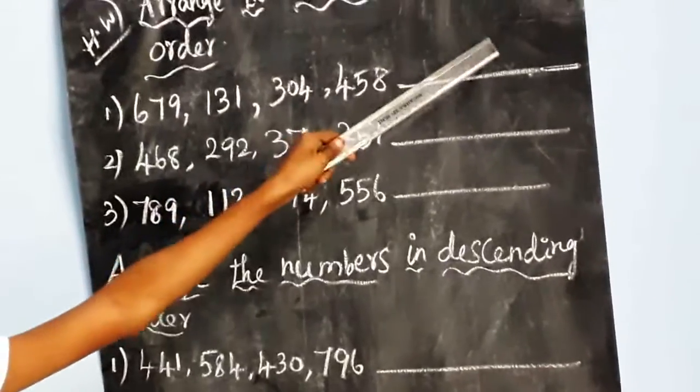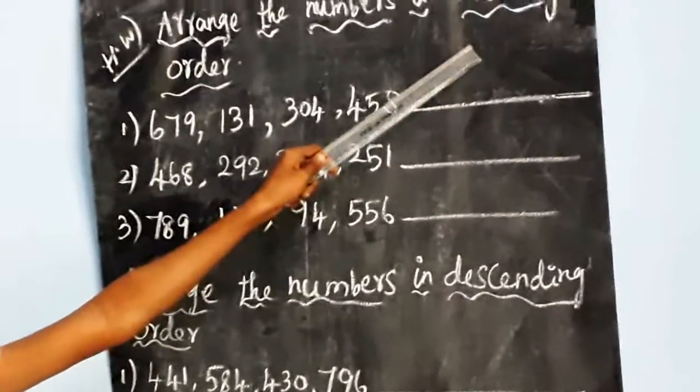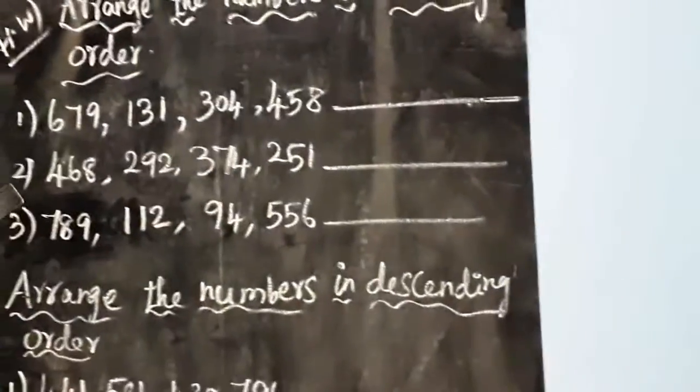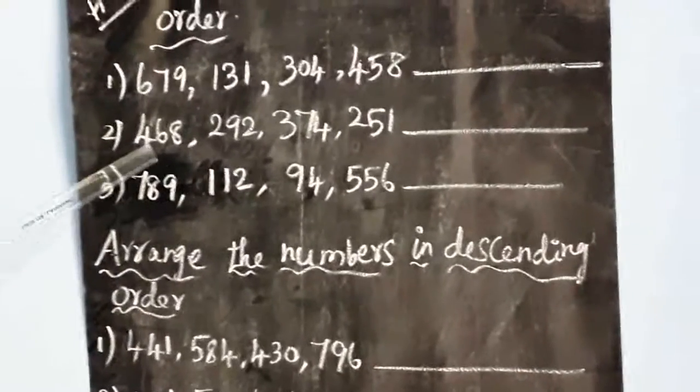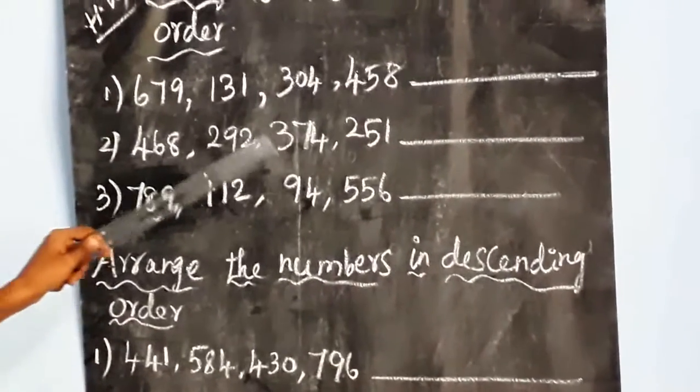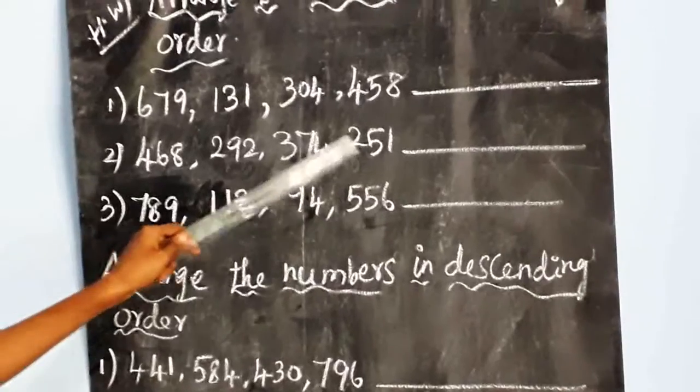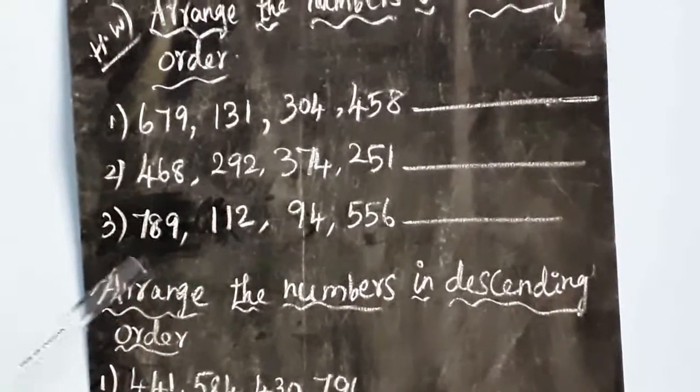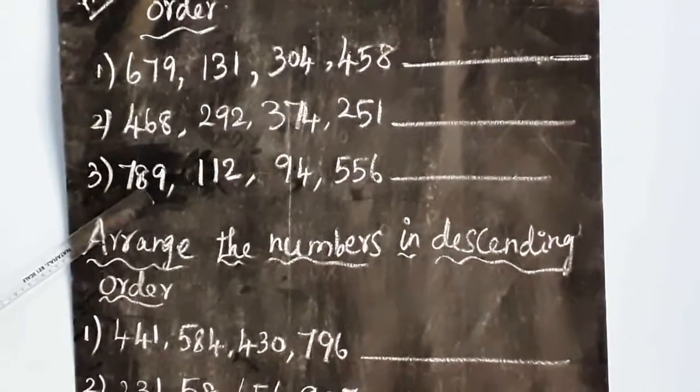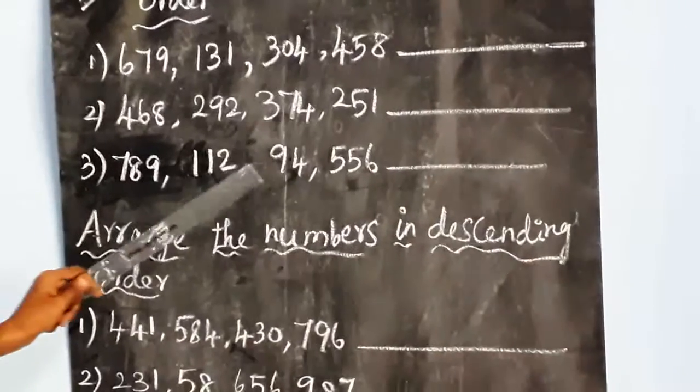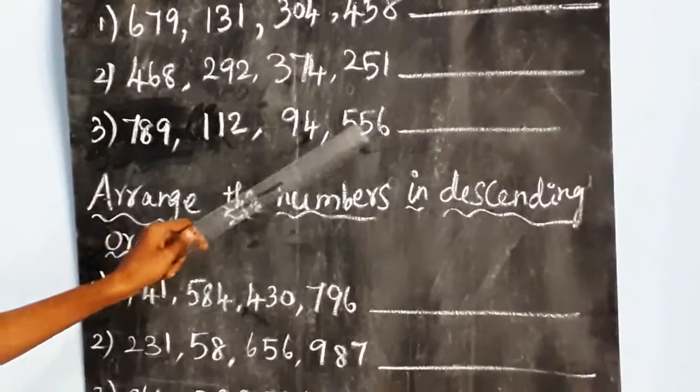Just write the answer in ascending order, smallest to greatest. Second sum: 468, 292, 374, 251. Then third sum: 789, 112, 94, 556.